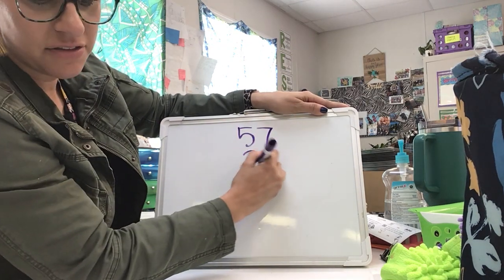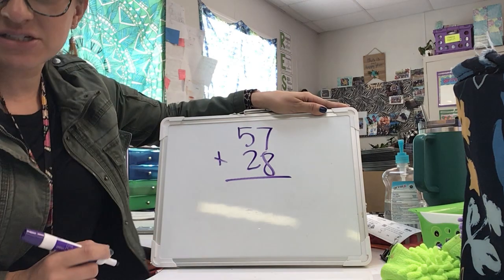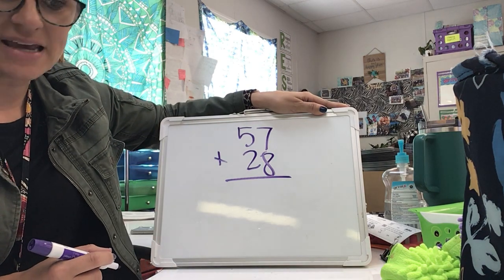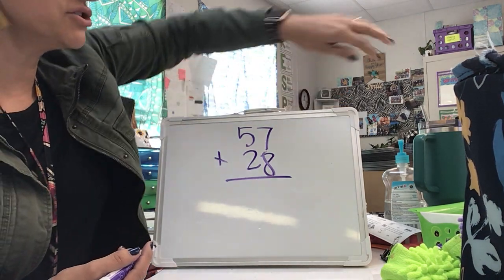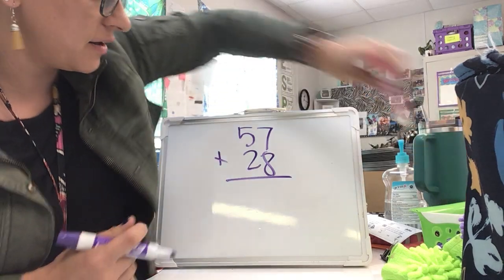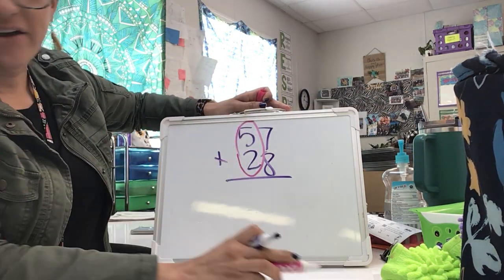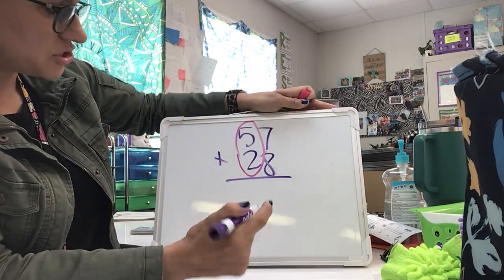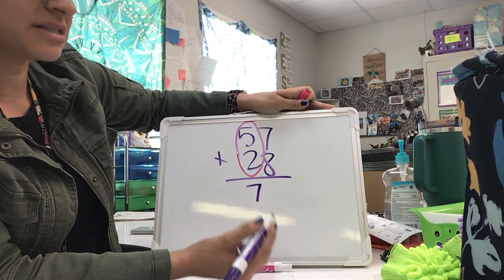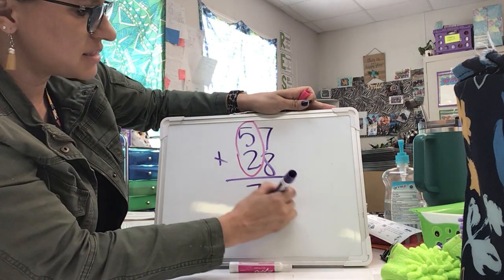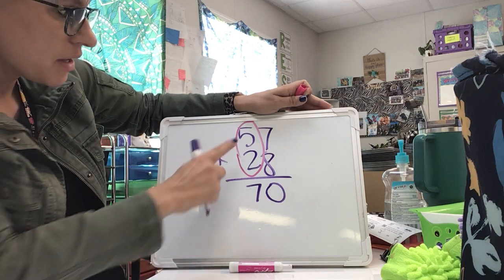If you had the equation 57 plus 28 and you were going to use partial sums, first you would add the tens. Five tens plus two tens is seven tens, but remember it's not just seven — it's seven with a zero because there is 70.